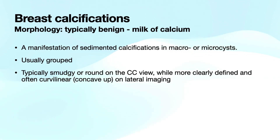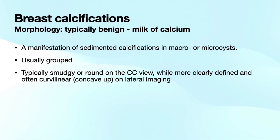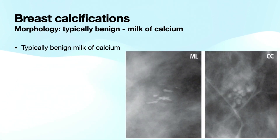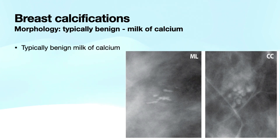We'll move on to discuss another typically benign type of calcification known as milk of calcium. Milk of calcium is a manifestation of sedimented calcifications in either macro or micro cysts. They are usually grouped and they're unique because they change morphology between the CC and 90-degree lateral or MLO imaging. They typically appear smudgy or round on the CC view and are less well-defined, while they're more clearly defined and often curvilinear or concave up — giving that teacup appearance — on lateral imaging. You can see on the CC view how smudgy and poorly defined those calcifications are, whereas on the ML view you get that nice teacuping, which is pathognomonic for benign milk of calcium. These can be safely assessed BI-RADS 2.